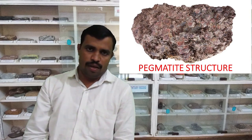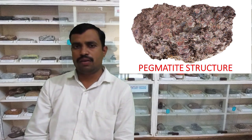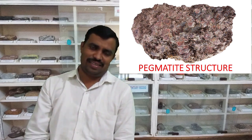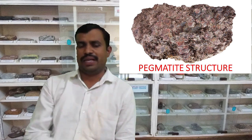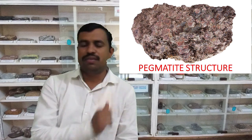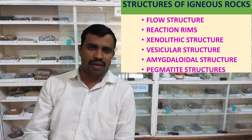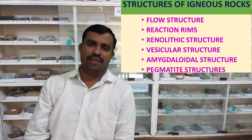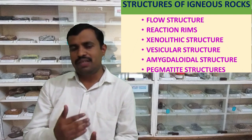The next structure is pegmatitic structures. In pegmatitic structures, the igneous rock has a large crystal size because of slow cooling, and the structure is called as pegmatitic structure. So on the basis of these structures, we can identify how the rocks are formed. This is the basic theme behind it.